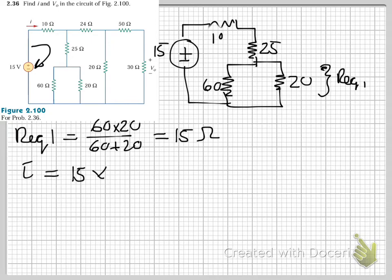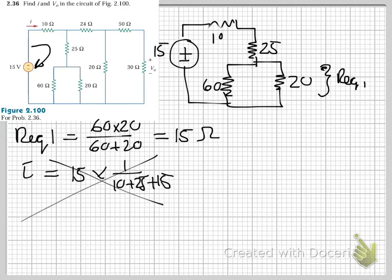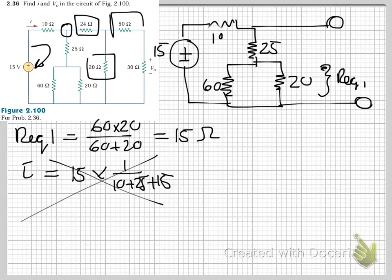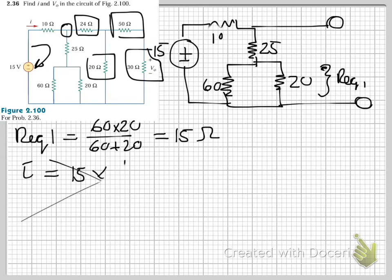That approach is wrong because there are even more resistors connected in the network. This is a whole network — you need to consider the entire circuit, including all resistors. You need to simplify the entire circuit and combine it into one simple loop before you can calculate the value of i.